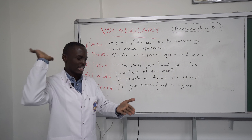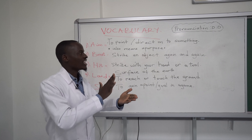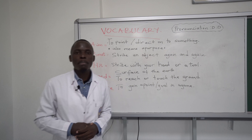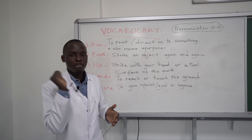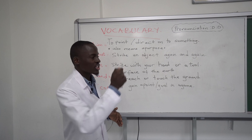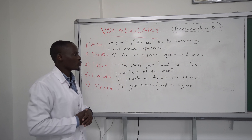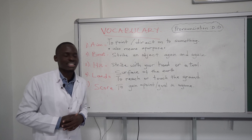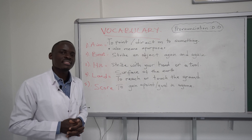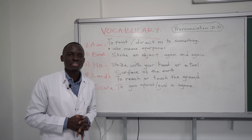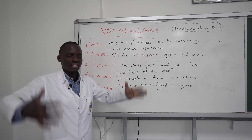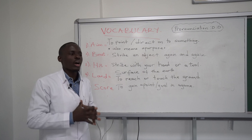To hit is to strike with your hand or a tool. A tool could be equipment like a bat — a table tennis bat, for example. We use it to hit the ball. Then there is land.